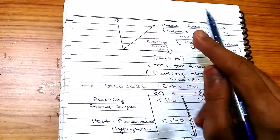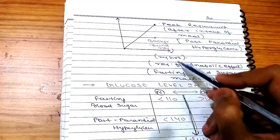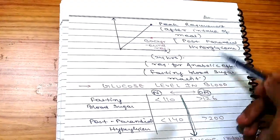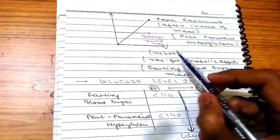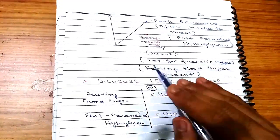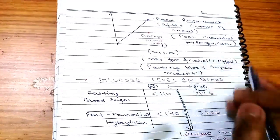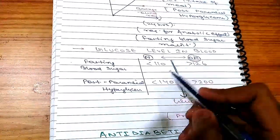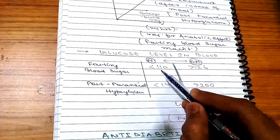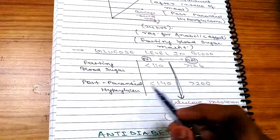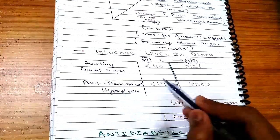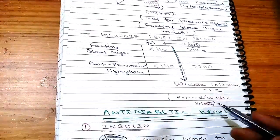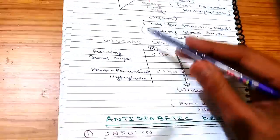Insulin is required for two things: peak requirement and basal requirement. Peak requirement addresses postprandial hyperglycemia after meals. Basal requirement covers 24-hour anabolic effects and fasting blood sugar maintenance. Normal fasting blood sugar is less than 110 mg/dL; in diabetes it is more than 126. Postprandial: normal less than 140, diabetic more than 200. Values in between represent glucose intolerance — the pre-diabetic stage.